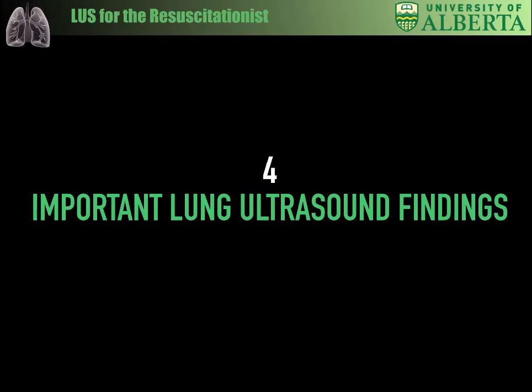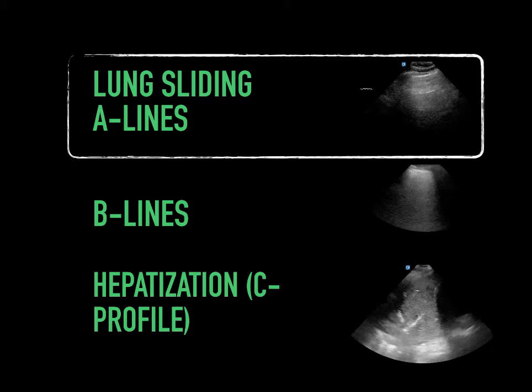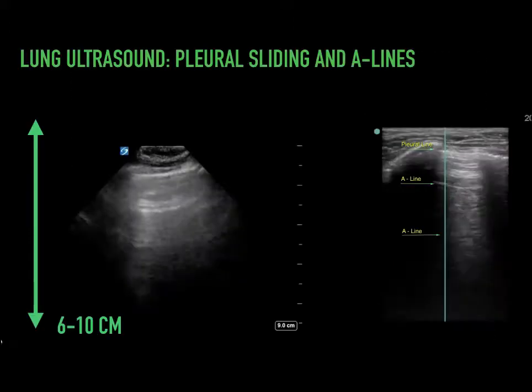There are really four important lung ultrasound findings that, if you can master, allow you to diagnose a variety of lung pathology immediately at the bedside. The four findings are: lung sliding, A lines, B lines, and hepatization, or the C profile. Let's start with lung sliding and A lines.